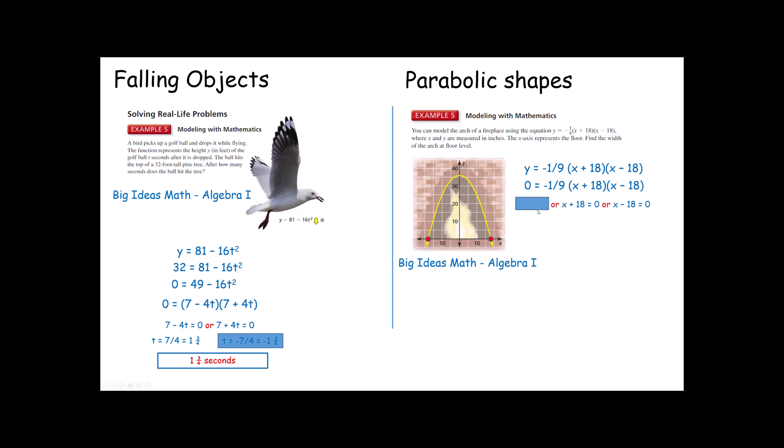We're going to set each of the factors equal to 0. 0 equals negative 1 ninth. Makes no sense. x plus 18 equals 0. Should give you negative 18. We're going to hold that for just a second. And x minus 18 equals 0 is going to give you positive 18. Notice this is the point 18, 0. This is the point negative 18, 0. So how wide is it? Well, from the center to one point, we said that was over 18. From the center to the other point is also 18. It's 18 in a negative direction, but we're concerned about distance. So we're not concerned about positives and negatives. Altogether, that is 36 inches wide.